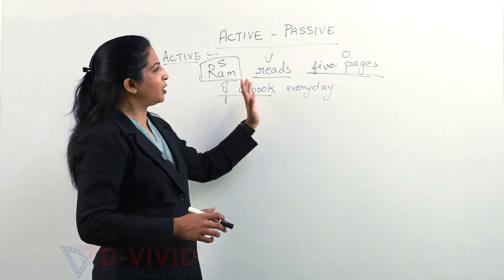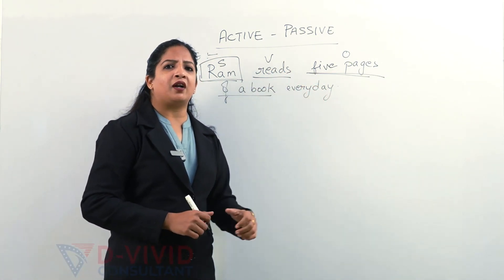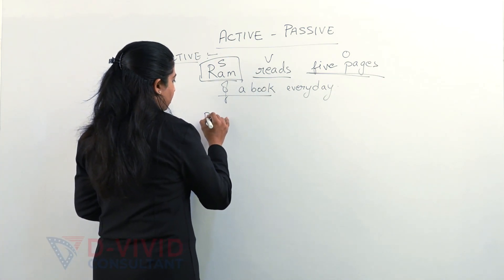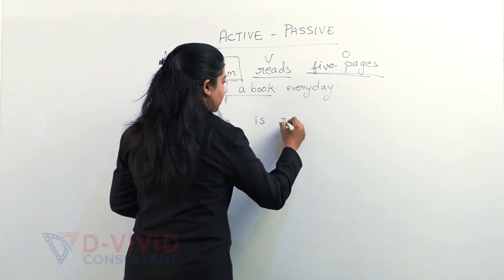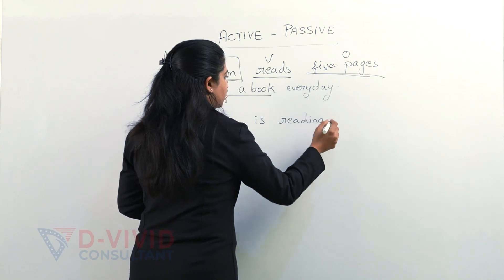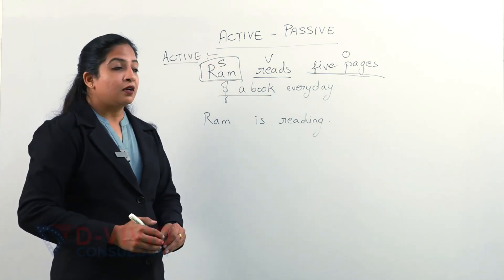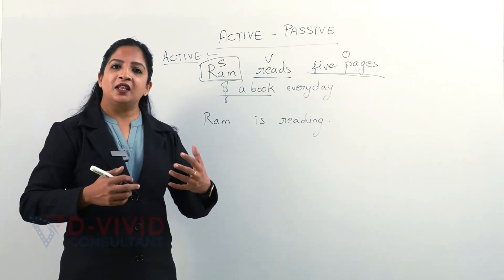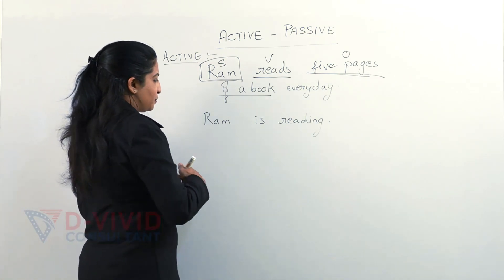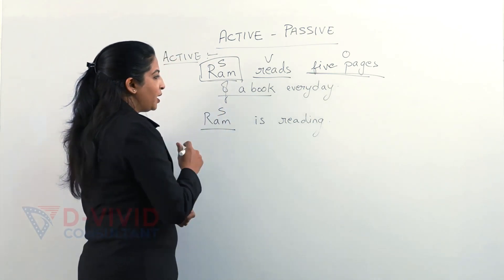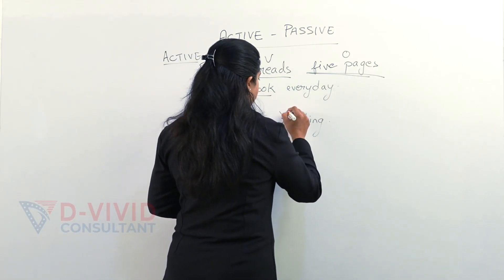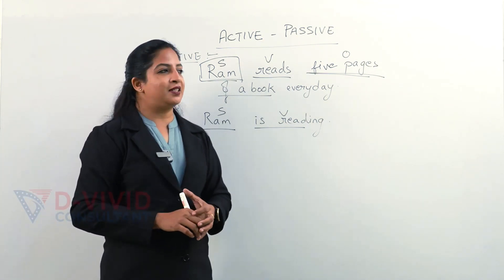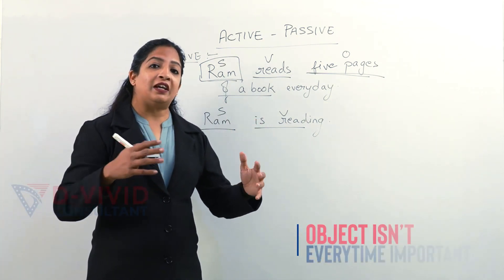It is not necessary that we have a complete object every time. Many times we only say 'Ram is reading' — full stop. Ram is reading a newspaper or his book; we don't even know what he is reading. In this sentence, we have a subject and a verb, and we have omitted the object.